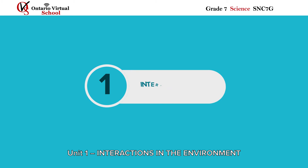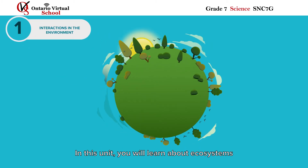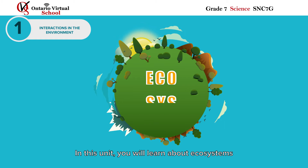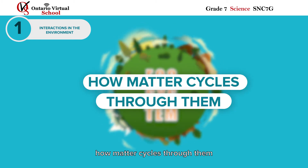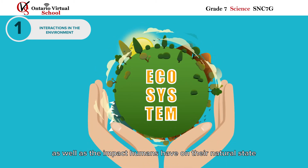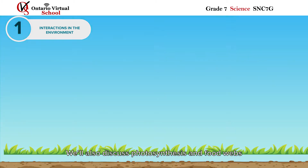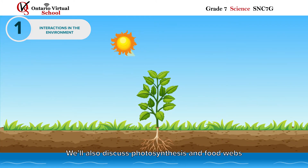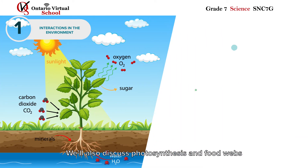Unit 1 – Interactions in the Environment. In this unit, you will learn about ecosystems, how matter cycles through them, as well as the impact humans have on their natural state. We'll also discuss photosynthesis and food webs.